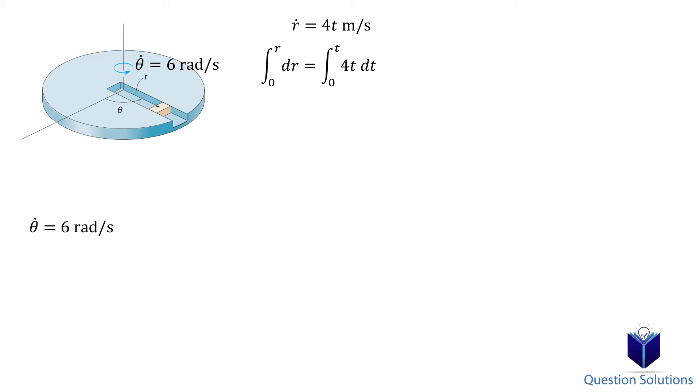This is the same as when we need to figure out a position equation from velocity. The lower and upper bounds for our integral are the following. The distance starts at zero meters and the time starts from zero seconds. Let's solve the integral.